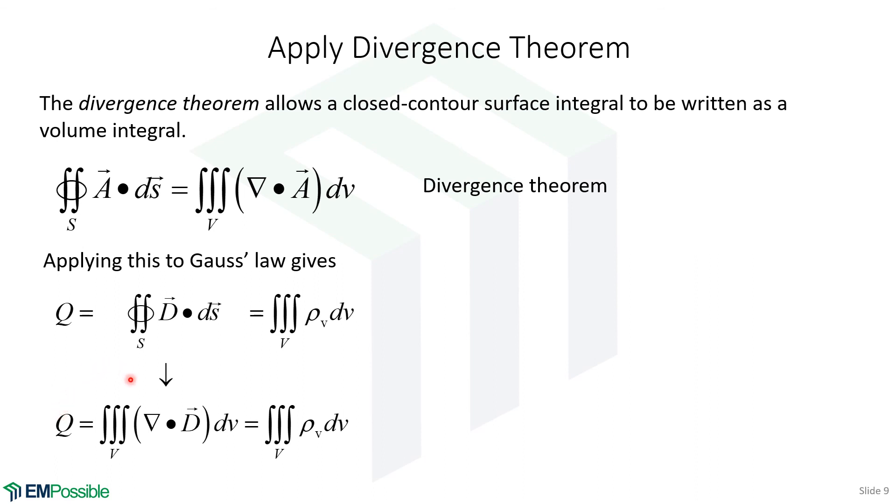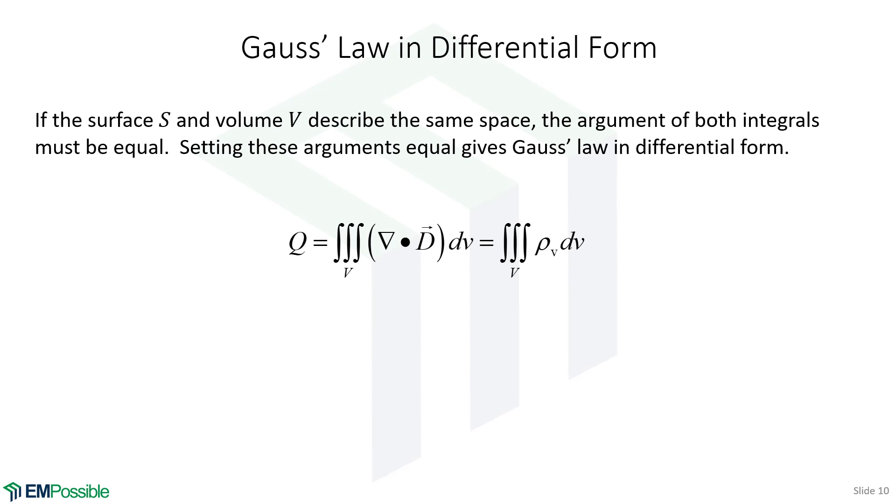Now we have total charge is two different volume integrals giving us the same answer. So if we have two volume integrals giving us the same answer, it makes sense then that the arguments of those volume integrals should be the same. That has to mean that the divergence of the electric flux has to be the same thing as the volume charge density. So if we set those equal, that is Gauss's law in differential form.